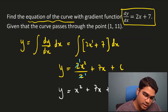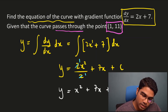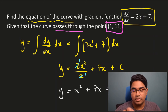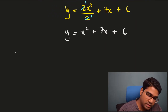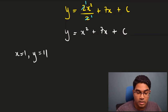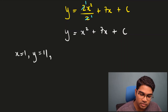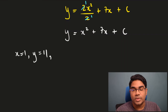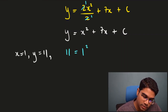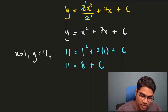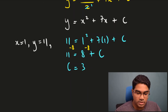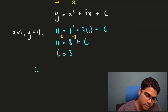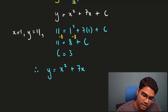Looking at the rest of the question: given that the curve passes through the point (1, 11), this gives us the value of y and the corresponding value of x. When x is 1, y is 11. We substitute these values into the equation of the curve since the point lies on the curve. We get 11 equals 1 squared plus 7 times 1 plus c, so 11 equals 8 plus c. Subtracting 8 from both sides gives c equals 3. Now that we have the value of c, we substitute back, so the complete equation is y equals x squared plus 7x plus 3.